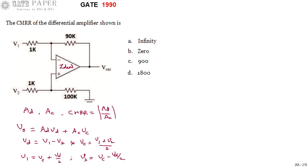So the first step is you have to express V0 in terms of V1 and V2. Later, V1 and V2 are going to be replaced with VC plus VD by 2 and VC minus VD by 2. Then you are going to do some mathematical manipulation.